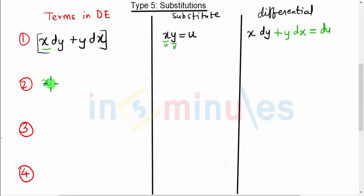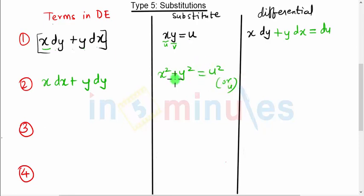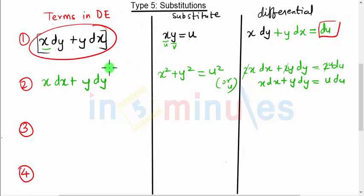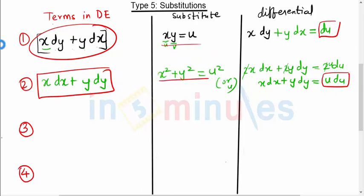The second substitution: if your differential equation has the term x dx plus y dy, substitute x squared plus y squared equal to u squared, or simply equal to u. Taking the derivative gives 2x dx plus 2y dy equal to 2u du, so the 2 cancels and we get x dx plus y dy equal to u du.